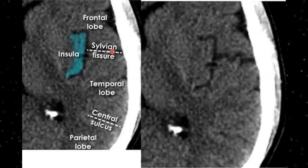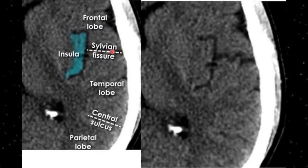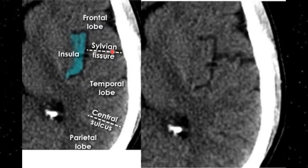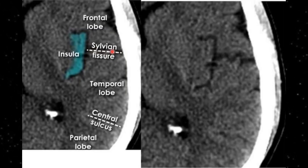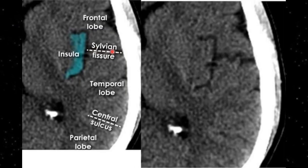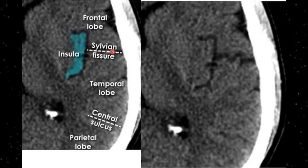In my previous video, the basics of brain CT radiological anatomy were discussed — anterior, posterior, and middle cranial fossae, frontal, posterior, temporal and occipital lobes were outlined, and brain stem parts including the medulla oblongata, pons, and midbrain were discussed at length. Basal ganglia were also sufficiently covered.